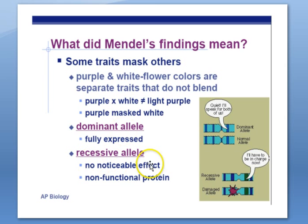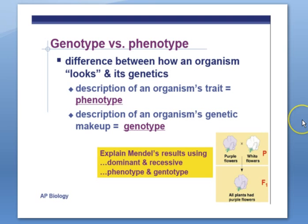Genotype and phenotype describe the difference between how an organism looks and its genetics. A phenotype is a description of the organism's physical traits — think 'phenotype' and 'physical appearance,' both starting with 'ph.' This includes not just outward appearance but things like hemoglobin, a protein in red blood cells. A genotype is a description of an organism's genetic makeup, usually represented by two letters, because we have two of every chromosome and therefore two of every gene.